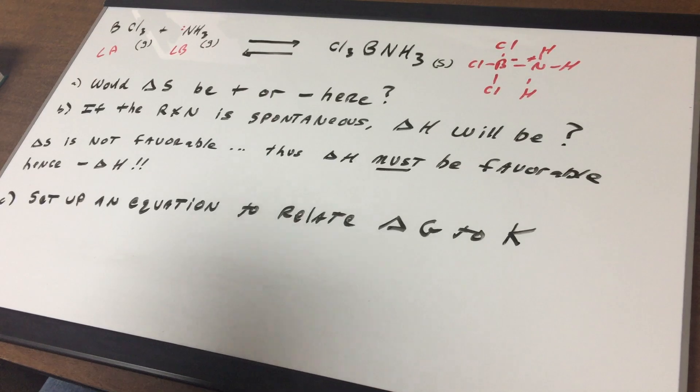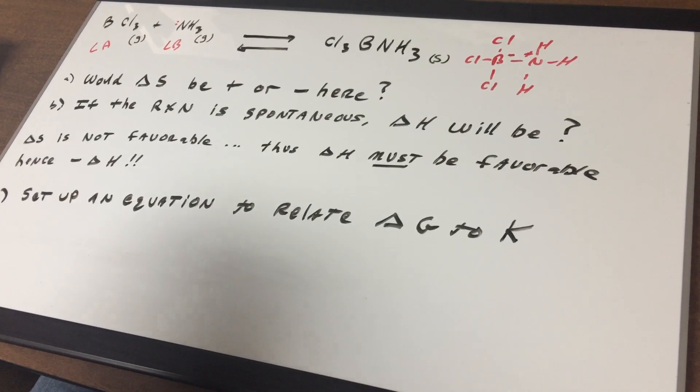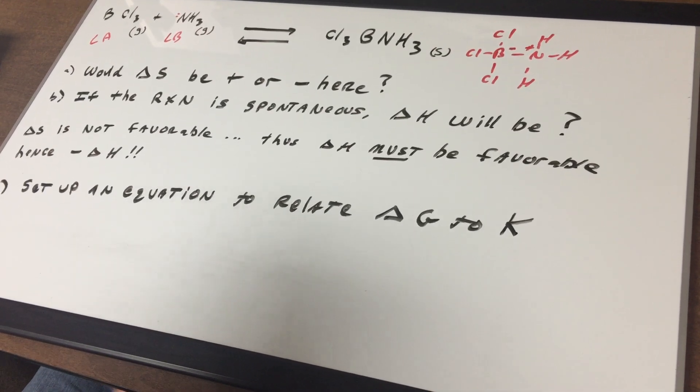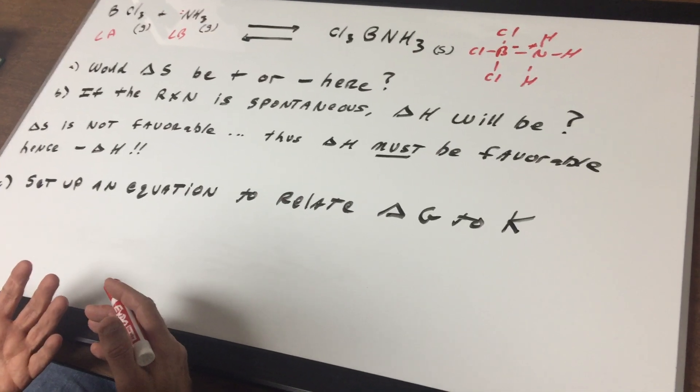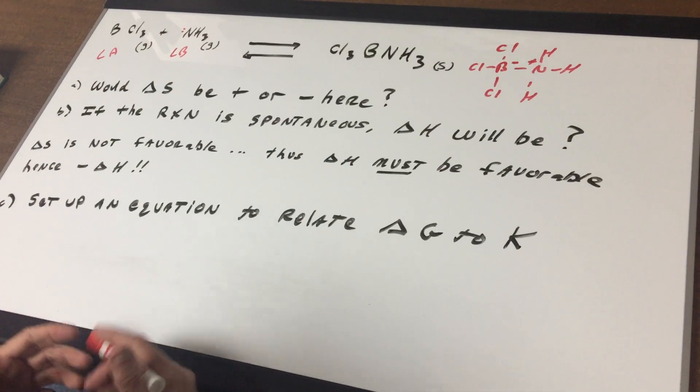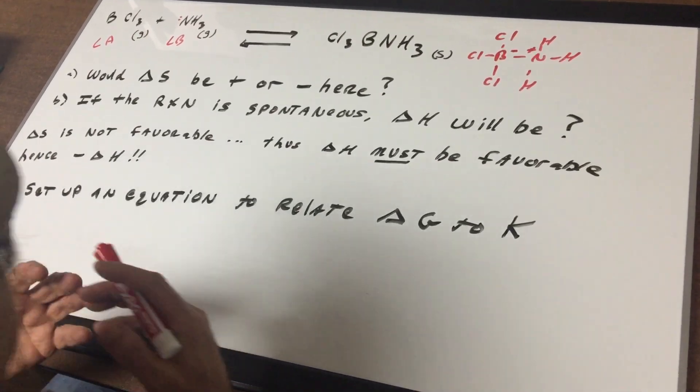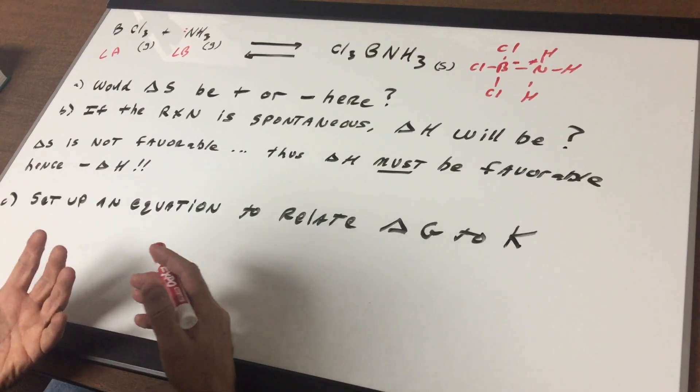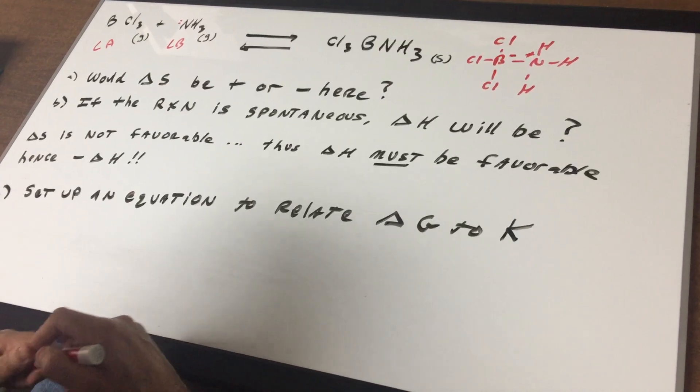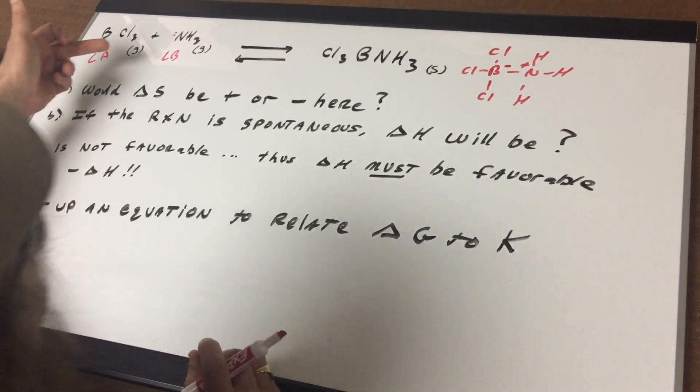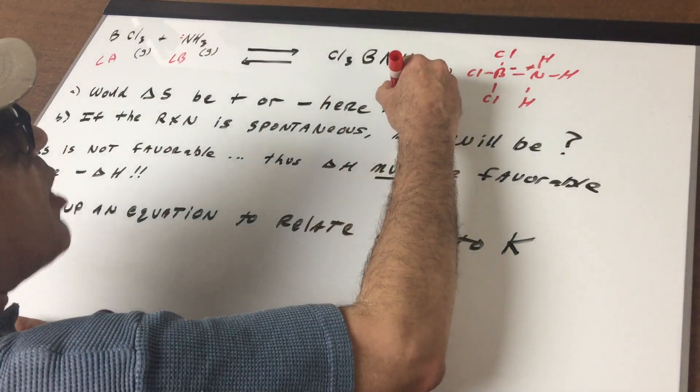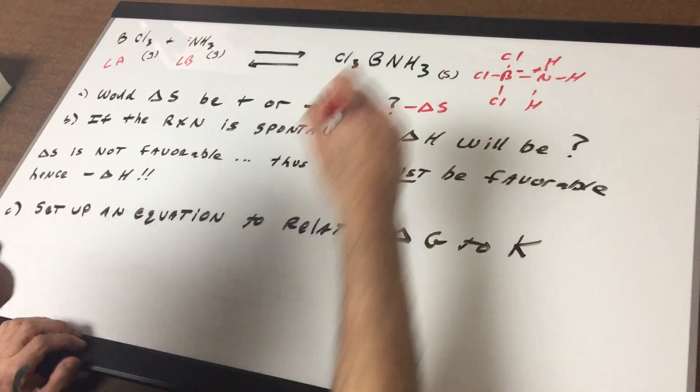Now what I want to do on this problem is to see what would the delta S, meaning the entropy of the disorder, be? Would it be positive, meaning are we increasing the disorder, or are we decreasing the disorder? Well, a gas has a lot of space and the particles are very random. So if you're forming a gas, you're increasing the disorder. Here you're forming a solid, so you are decreasing the disorder.